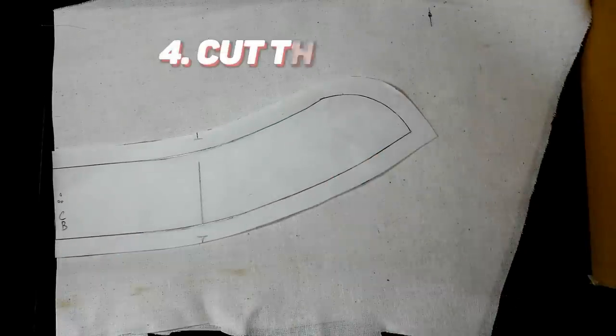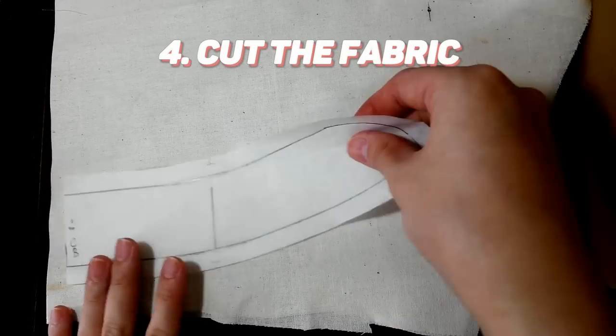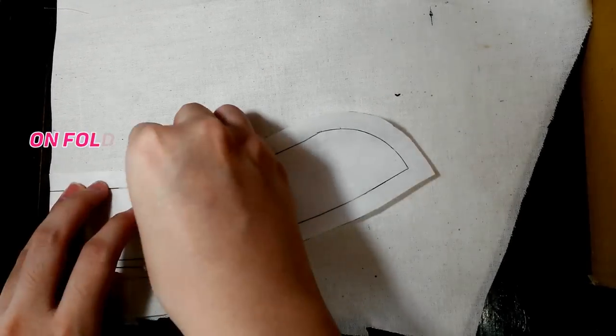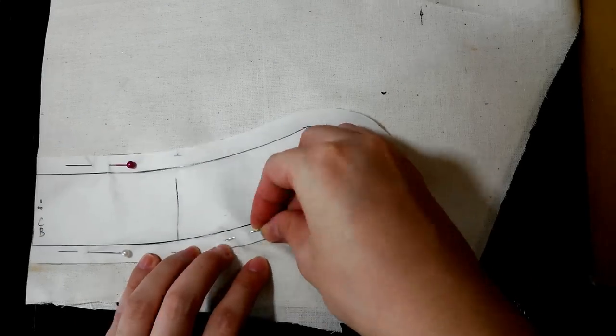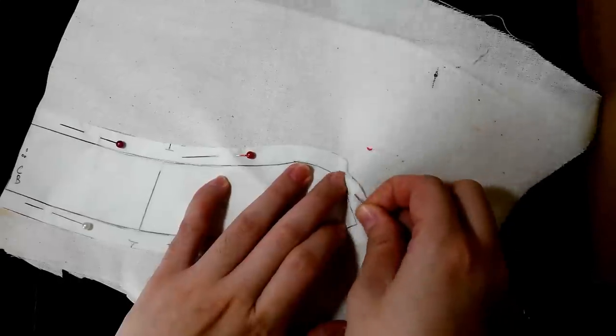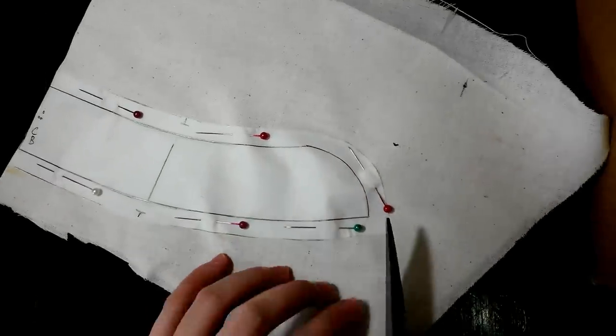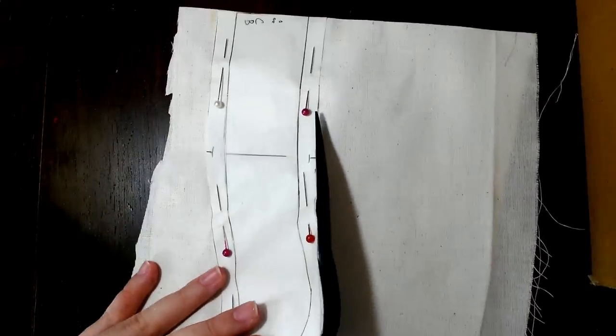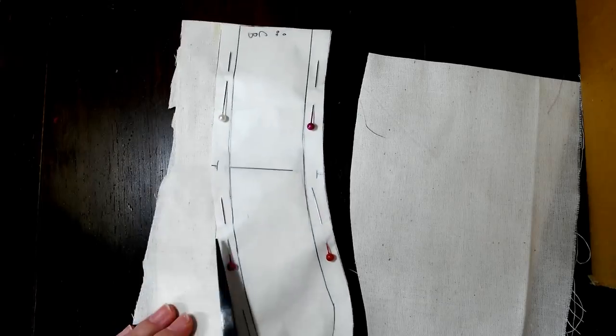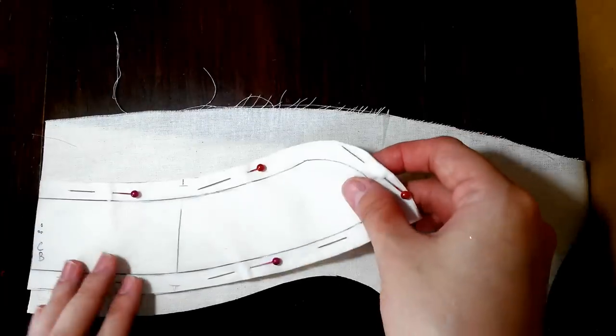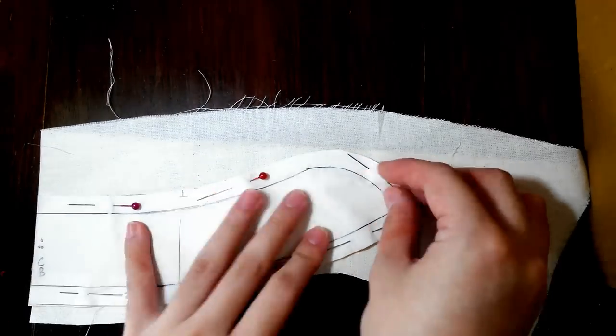My center back is unfolded, so I didn't put allowance on the center back line. Cut twice, as one side will be the collar lining.